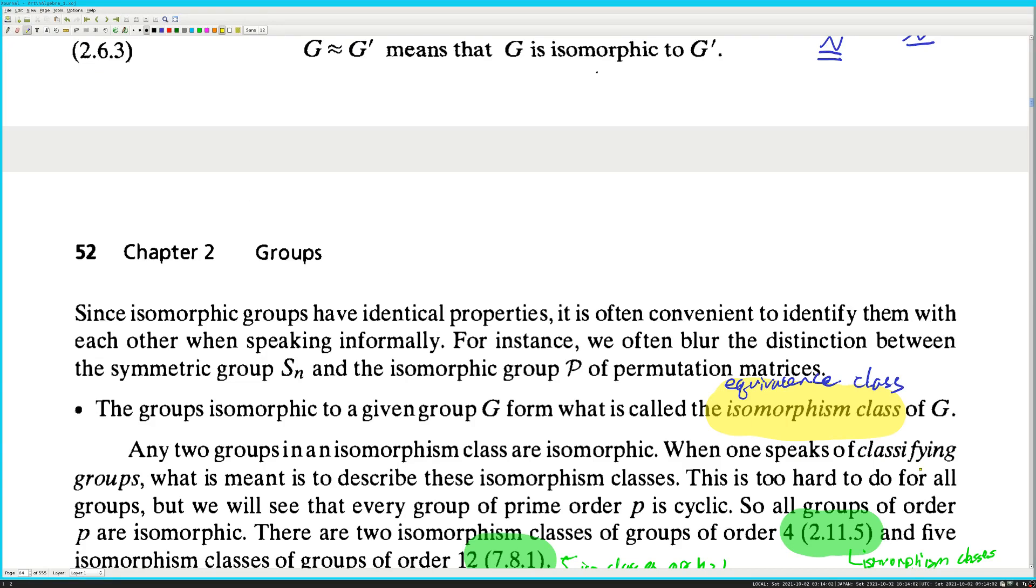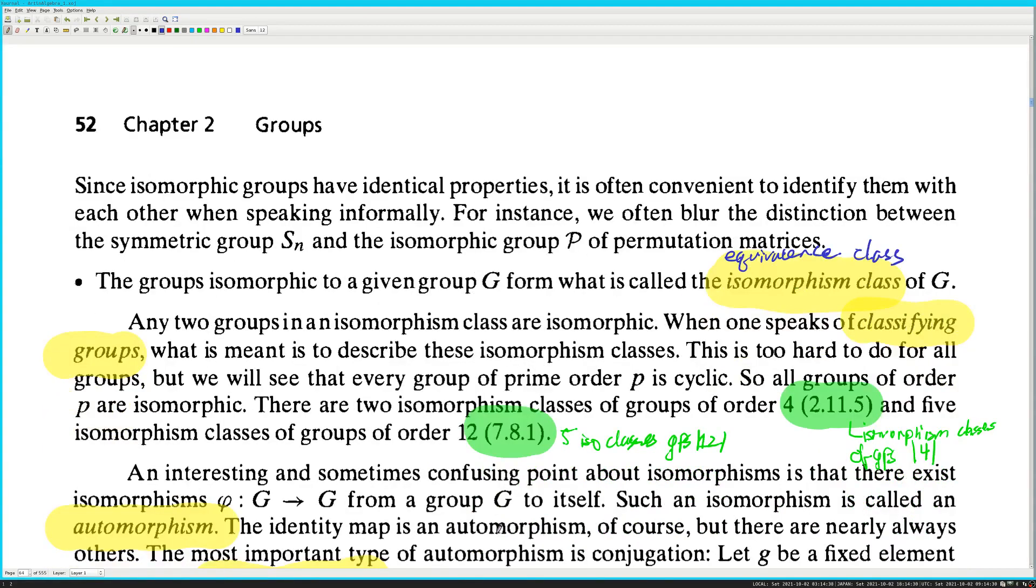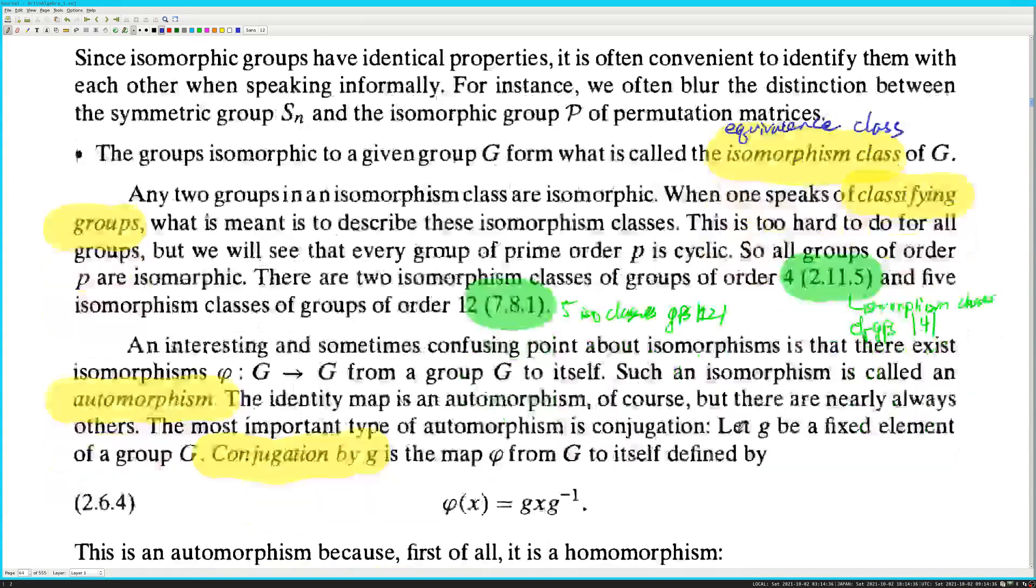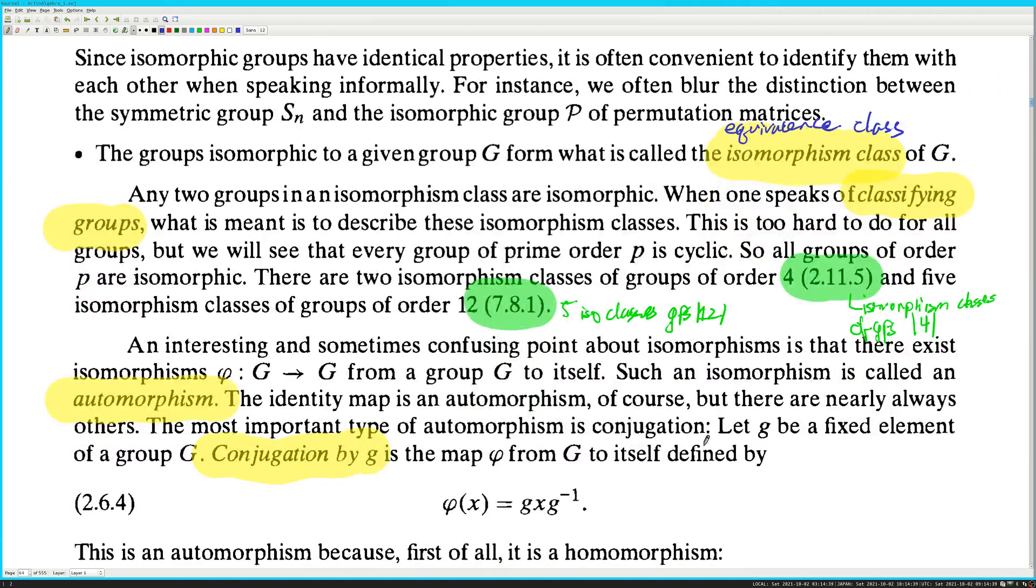Since isomorphic groups have identical properties, it is often convenient to identify them with each other when speaking informally. For instance, we often blur the distinction between the symmetric group Sn and the isomorphic group P of permutation matrices. The groups isomorphic to a given group G form what are called the isomorphism class. The isomorphism class of G. Yes, this is what I was talking about. Equivalence classes. Go look at AA21. Any two groups of an isomorphism class are isomorphic. When one speaks of classifying groups, what is meant is to describe these isomorphism classes. Exactly what I was saying earlier.